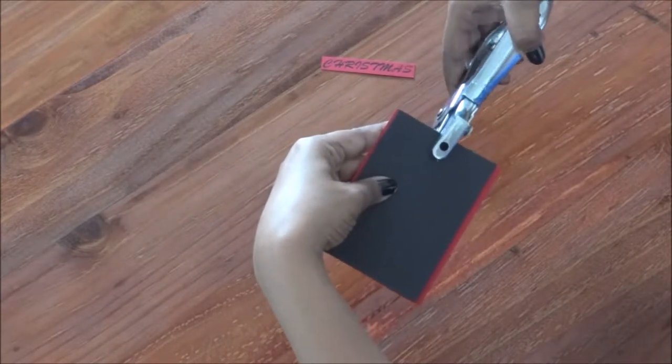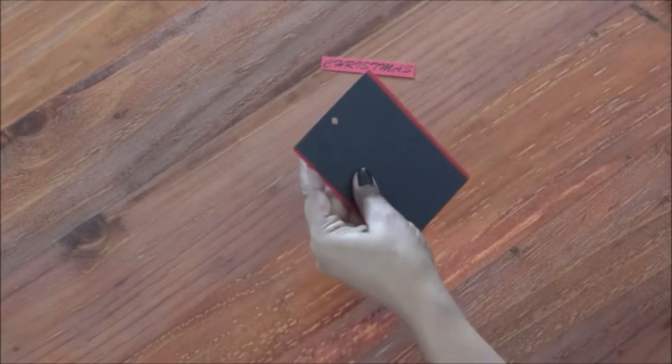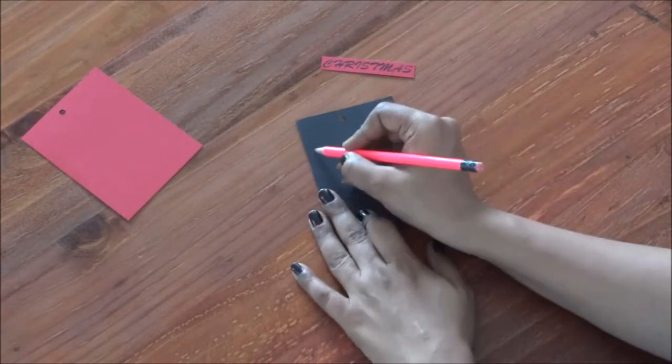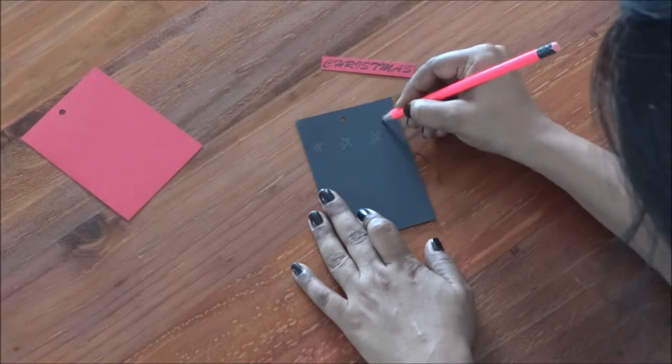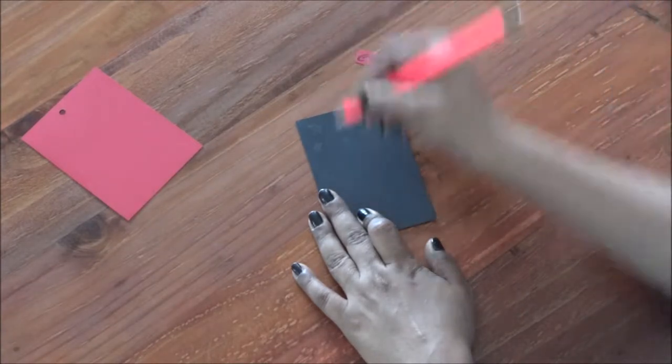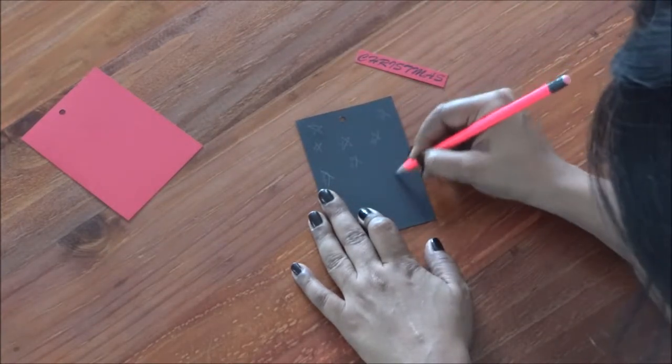Now keep the red one aside. Now we'll be making some cute little stars. Try it with a pencil. Don't worry, you don't have to rub it, so it's absolutely fine even if it's a little messy. It looks good.